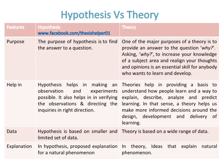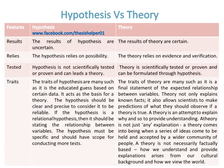A hypothesis is based on a smaller and limited set of data, while a theory is based on a wide range of data. In a hypothesis, there is a proposed explanation for a natural phenomenon, while a theory provides ideas that explain natural phenomena. The results of a hypothesis are uncertain, while the results of a theory are certain. The hypothesis relies on possibility, while the theory relies on evidence and verification.